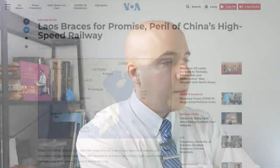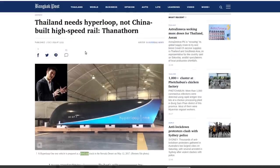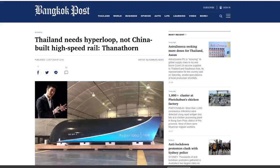This isn't the only way they're trying to detract from the projects. They actually do have people actively working to stop these projects. For example, this is an article from 2018. Thailand needs Hyperloop, not China-built high-speed rail.